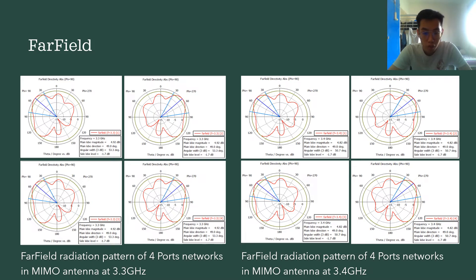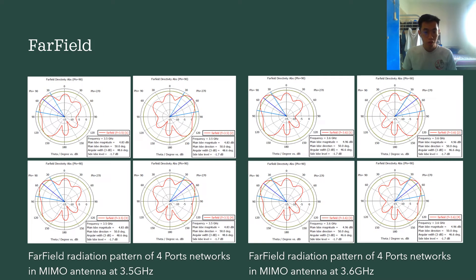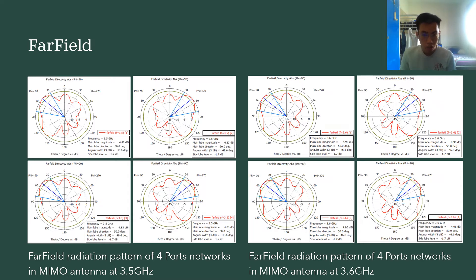For the far field radiation pattern at 3.4 GHz, it possesses the same radiation pattern as 3.3 GHz, with only differences in the main lobe magnitude and the angular width. Their main lobe direction and the side lobe level are the same. For the far field radiation pattern of 3.5 GHz and 3.6 GHz, they possess a different main lobe direction compared to 3.3 GHz and 3.4 GHz, but they have the same four radiation patterns with different main lobe magnitude and angular width.